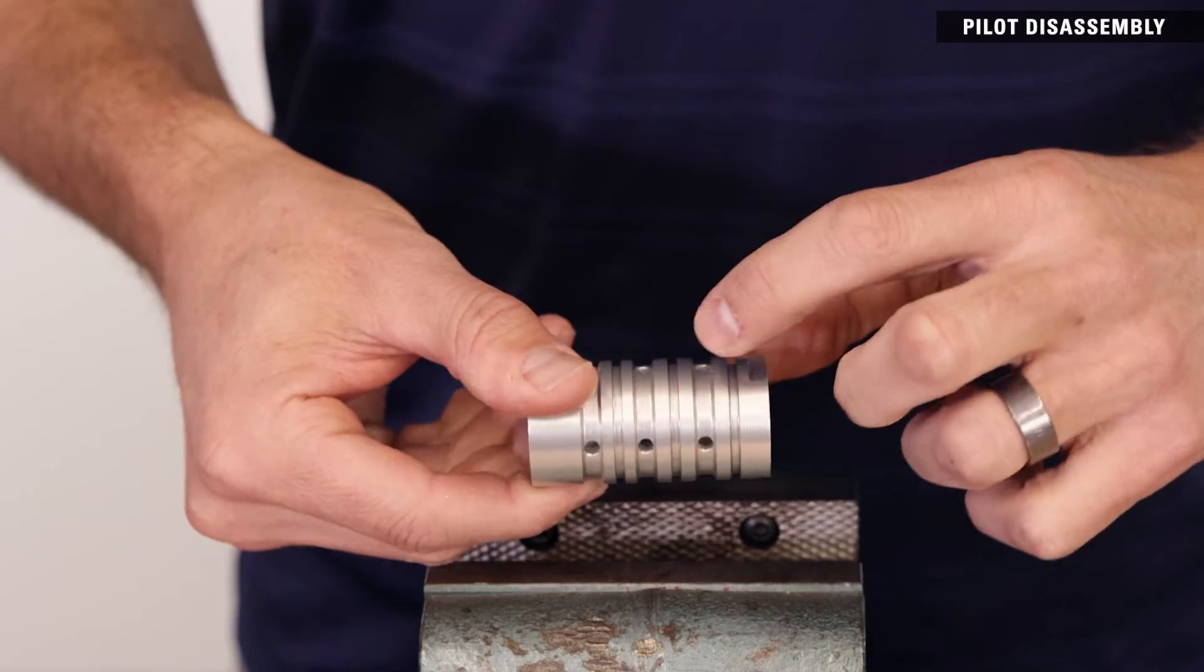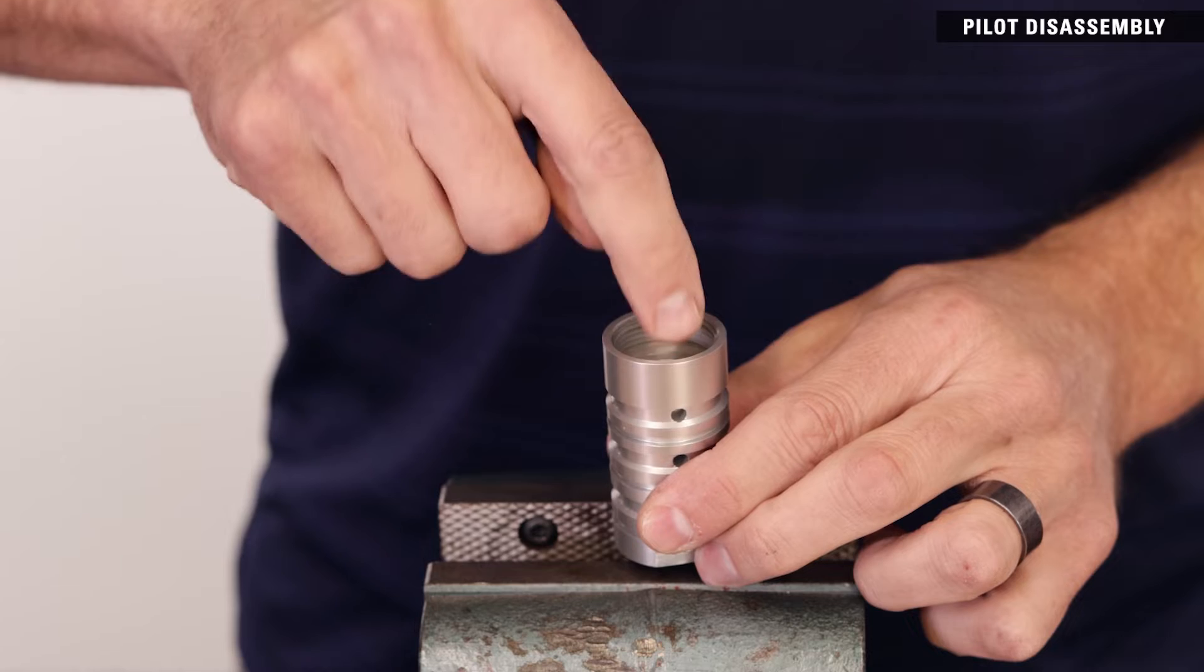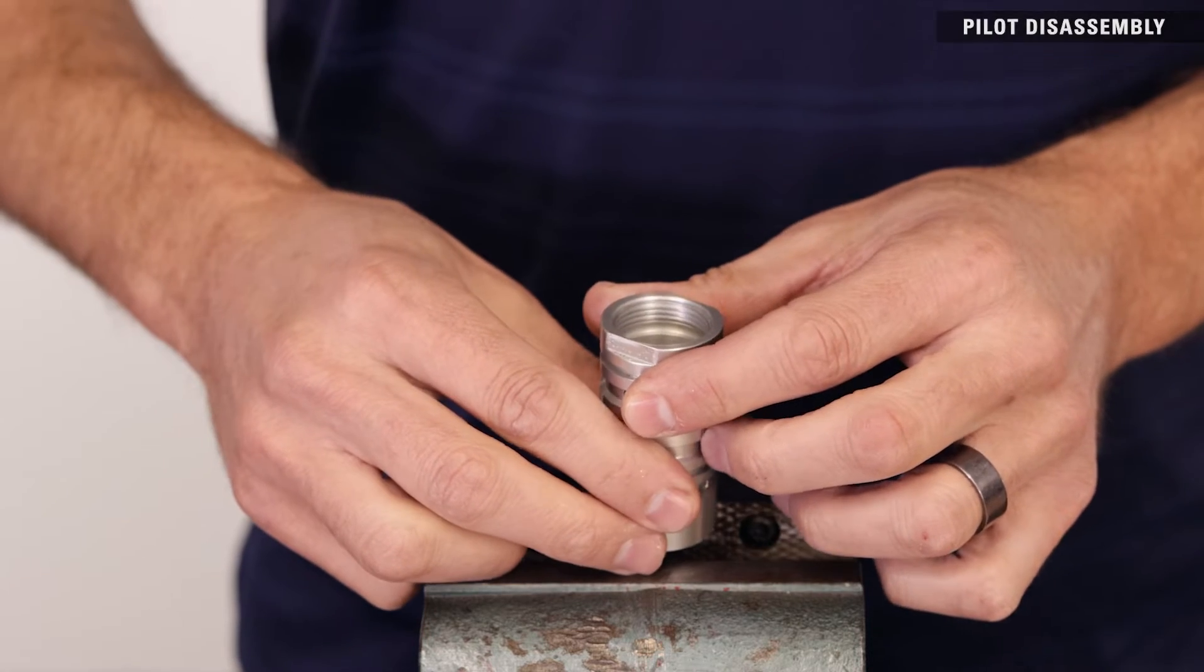Inspect pilot plug's seat area for scratches, scoring, or pitting. If there's damage that could allow a leak path, you'll need to replace the pilot body.